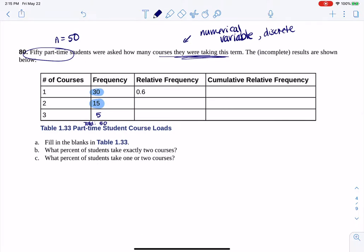So just as a little side note, if I wanted to, I could say 30 students are taking 1 course, I could say 15 students are taking 2 courses, and I could say then that 5 students are taking 3 courses.